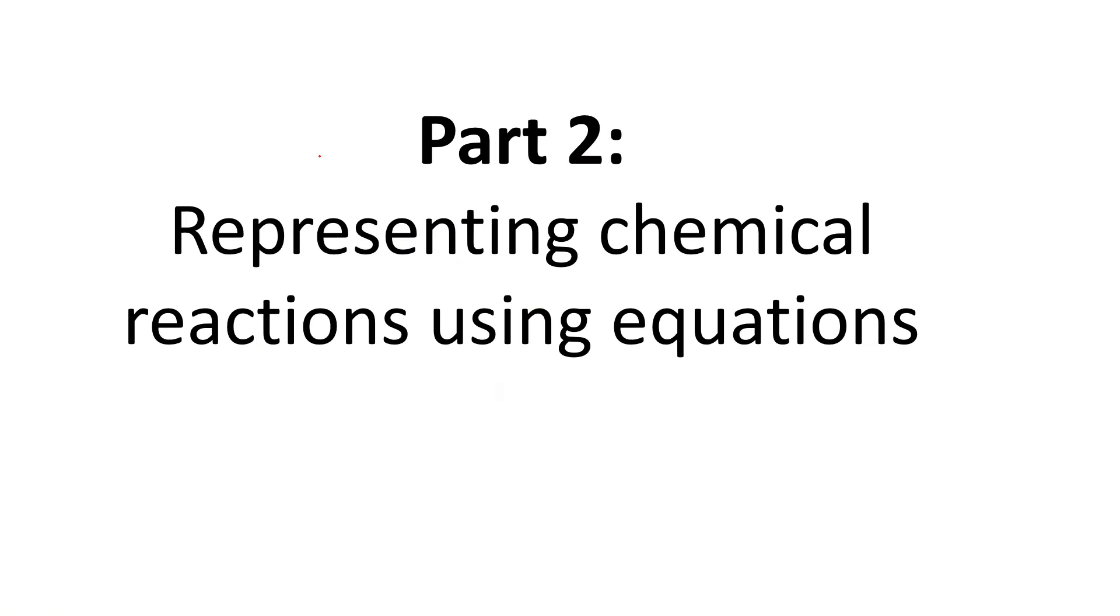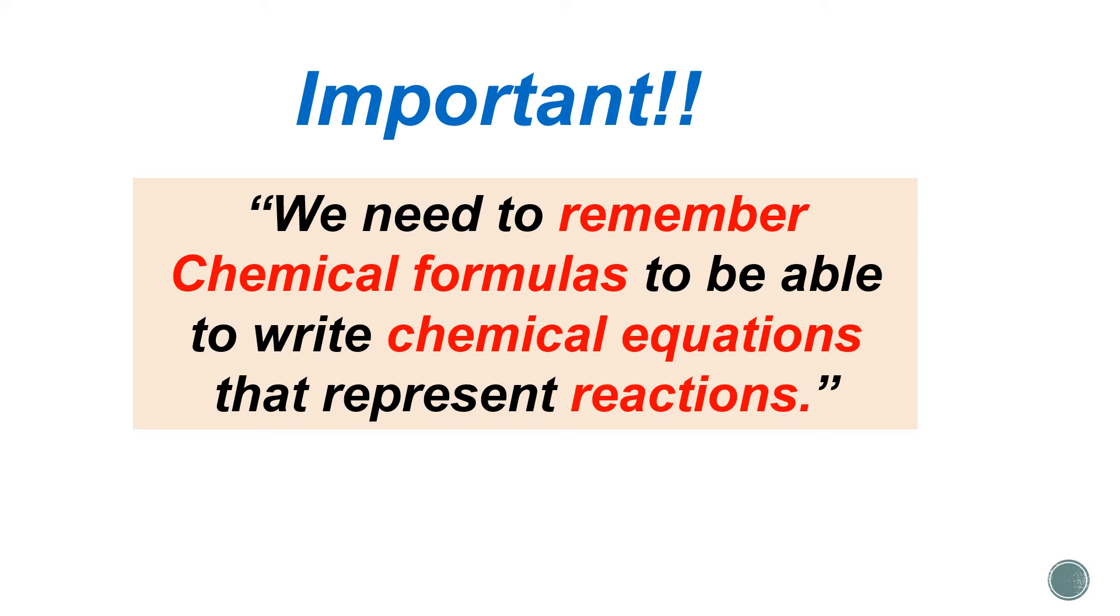And that's the end of part one. So we know what is a chemical reaction, we know what's a physical change, we know what's a chemical change, and we know some of the signs of chemical reactions. Now we go to the most important part which is part two and that is representing chemical reactions using equations - كيف نحن نمثل التفاعلات الكيميائية باستخدام المعادلات الكيميائية. And to do that guys first of all you need to remember chemical formulas from term one - remember ionic compounds, covalent compounds, كيف نكتب الصيغة الكيميائية - to be able to write chemical equations that represent reactions.